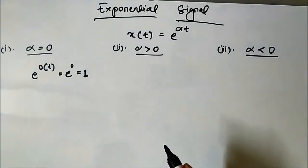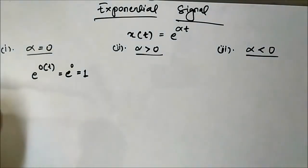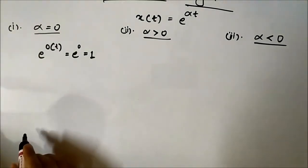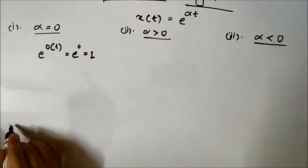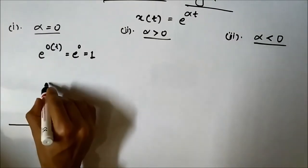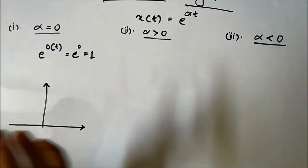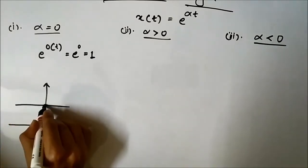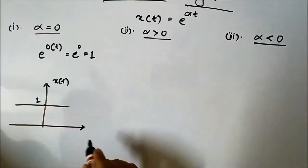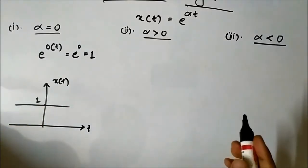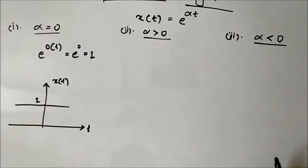So this signal will always be one, meaning the signal waveform will always be a flat line of constant amplitude equal to one. On the x(t) versus t graph, it will be a constant magnitude line of amplitude equal to one.